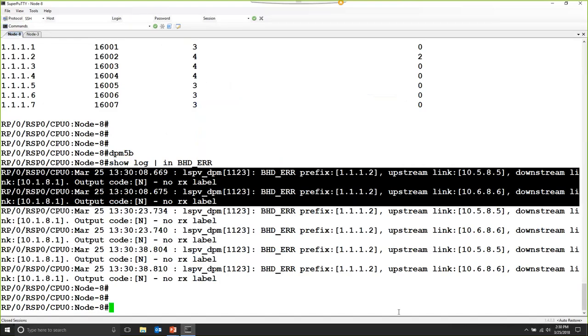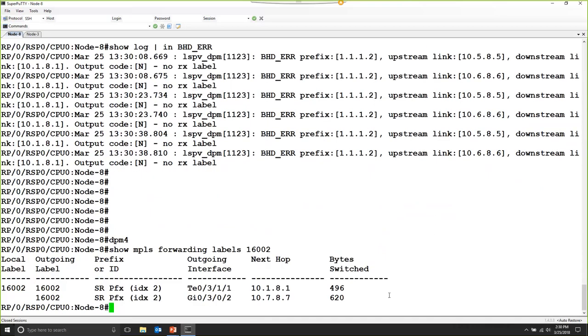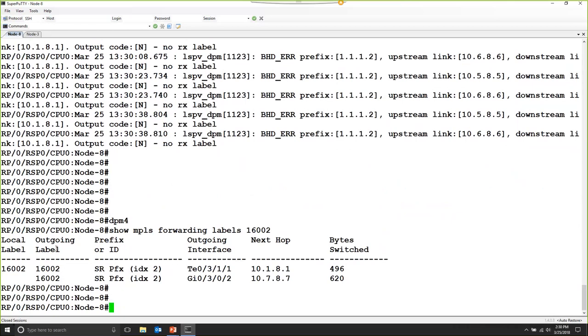So we're back on router number 8. First, we're going to verify that our LFIB entry for router number 2 is back to normal. And indeed it is. I no longer have the corruption for the label 16999 that I used to have.